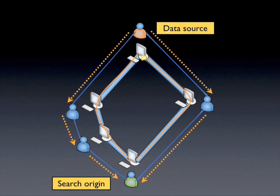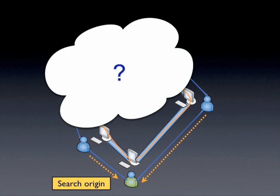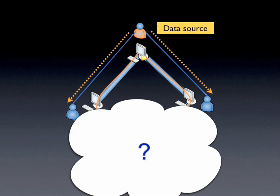Transferring data in this way protects the privacy of sender and receiver. In this example, there's only one data source, but in practice, OneSwarm obtains data from multiple data sources along multiple paths in the mesh. From the perspective of the receiver, the original data source could be anywhere in the network. All that the receiver knows is that data is being forwarded by directly connected friends. Similarly, the sender doesn't know which user is requesting data, only that a request was forwarded by friends. The ultimate destination could be anywhere in the mesh.